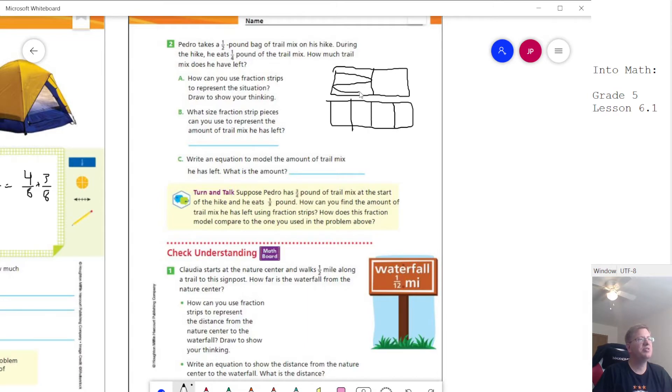So here's how much we started with. Here's how much we ate. And then here's how much we would have left. So we change it from half to fourths, we X out the part that we removed, and then we have this amount left.